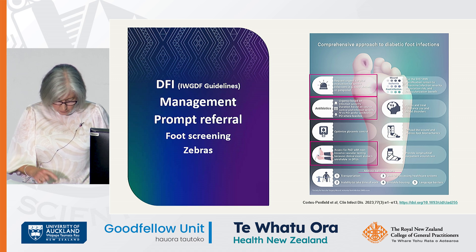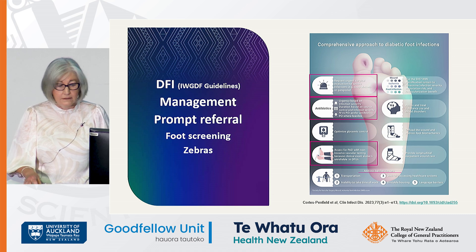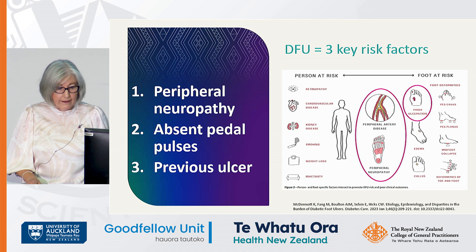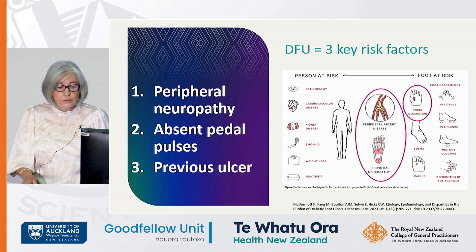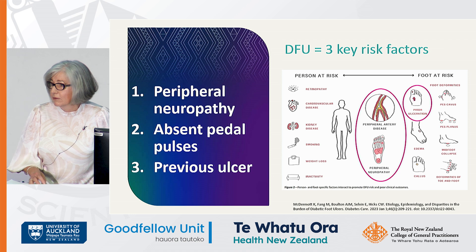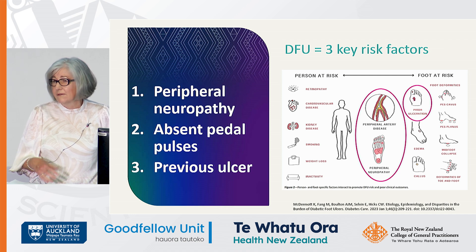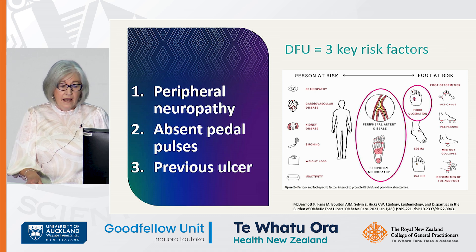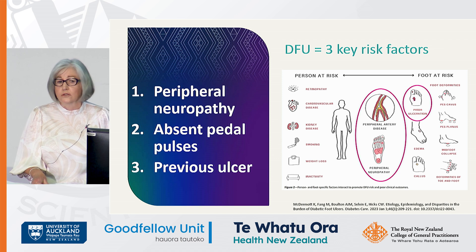Today we're going to have a closer look at the infections, reiterate the need for early referrals, see how important those annual foot screens are, and keep an ear out for the hoofbeats of zebras. Key risk factors for diabetic foot ulceration — what your screening is about — are peripheral neuropathy and peripheral arterial disease. If patients have had prior ulceration or amputation they're also at really high risk; within 12 months approximately 40% would have re-ulcerated. The presence of deformity with neuropathy or peripheral arterial disease also increases your risk of ulceration.